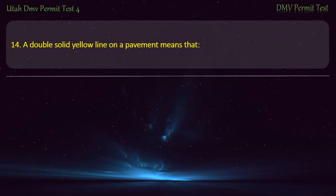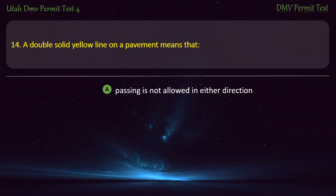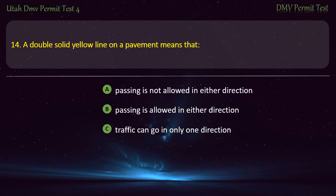Question 14. A double solid yellow line on a pavement means that: Passing is not allowed in either direction; Passing is allowed in either direction; Traffic can go in only one direction; or All traffic must stop at the line? Answer: Passing is not allowed in either direction.